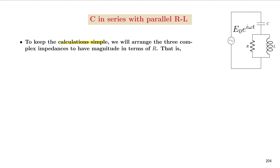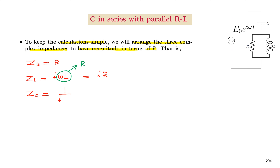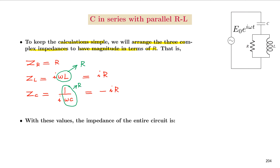In order to keep the calculations simple, we arrange the three complex impedances to have magnitudes in terms of the resistance R. That is, ZR has magnitude R, ZL = iωL is taken to have magnitude R so we write ZL = iR, and ZC = 1/(iωC) is written as −iR. With these values, the total impedance Z equals ZC in series with a parallel combination of ZR and ZL.